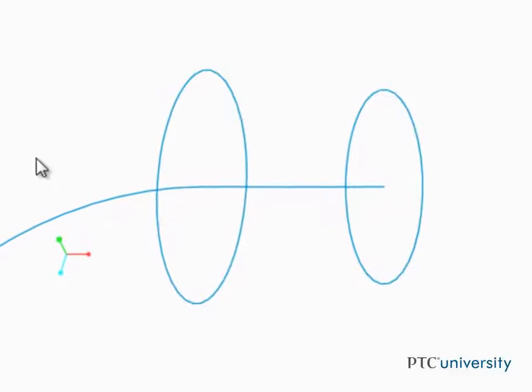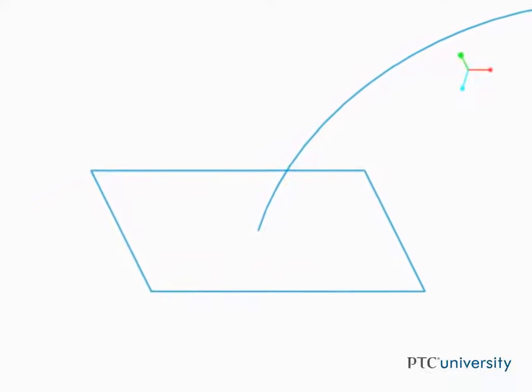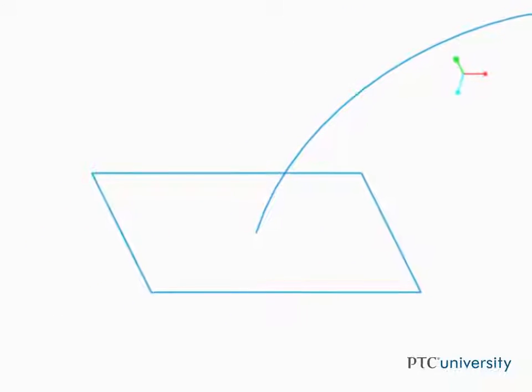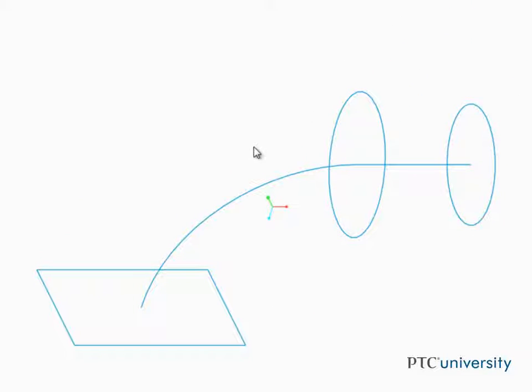You can select existing sketches to become sections for a swept blend feature. After selecting a trajectory, existing sketches, edges, or datum curves can be selected to be sections of the swept blend.